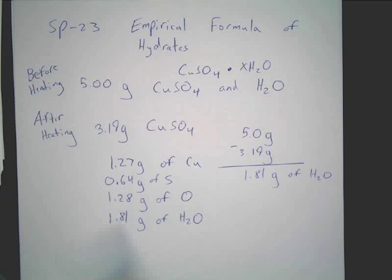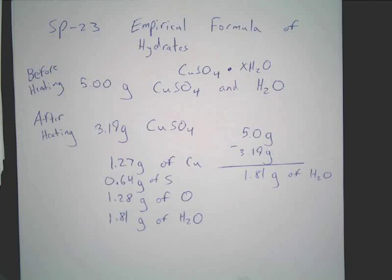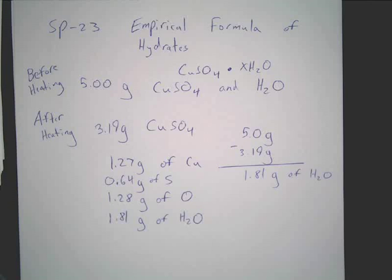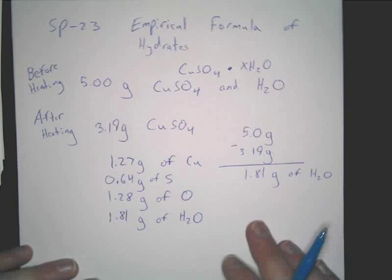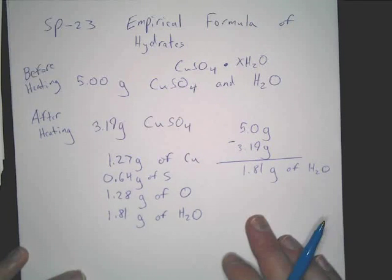All we're going to do now: we've got all these values, and we're going to convert to moles for all of them, then divide by the smallest value, then figure out what the ratios are. Do that for all of them right now — convert all of them to moles, just like an empirical formula problem.